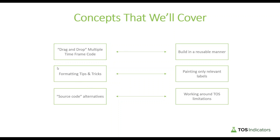The second concept is going to be around formatting. We've already talked about formatting in previous tutorials. In this particular one, we're going to be working a lot with the actual label component that thinkorswim has, and connecting boolean conditions to that to display or change colors based on whether we have a squeeze or not. For all of our Volatility Box members, we'll also show you how, if you already have the MTF squeeze histogram indicator, you can layer on both sets of labels to have them stacked on top of one another.